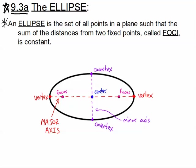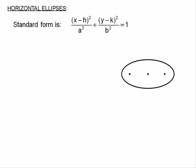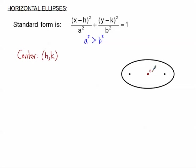For the horizontal ellipse, a squared is bigger than b squared, so the denominator under x squared is bigger than the denominator under y squared — that's what forces the ellipse to stretch along the horizontal x direction. The center is the point h, k, where h comes from the x parenthesis and k comes from the y parenthesis.